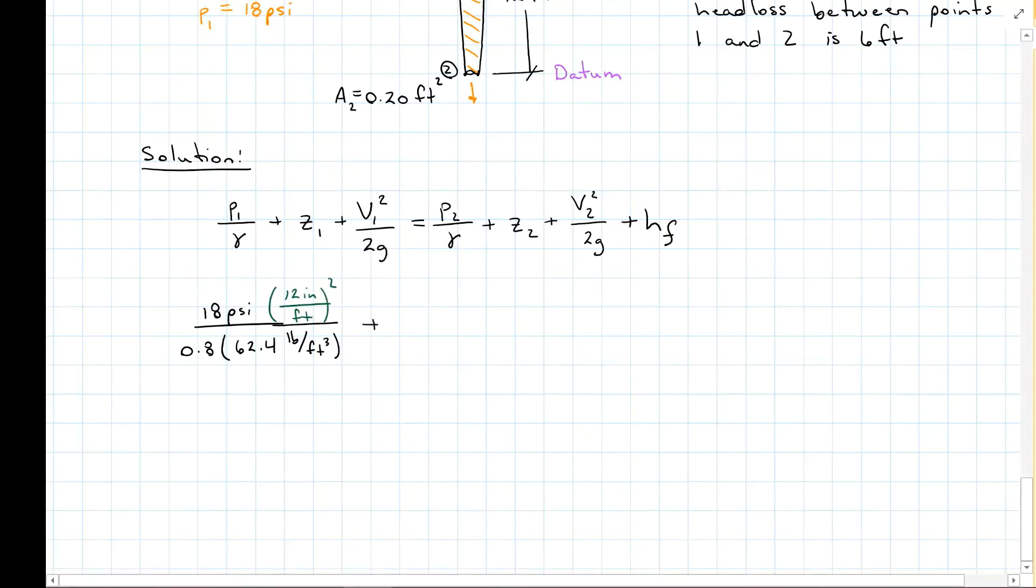Moving to my elevation, with my datum being at the bottom, that means that 1 is at 12 feet, plus velocity 1. I don't have a velocity, but I do have a flow rate. So let's do a little side trip over here. Flow rate is equal to velocity times area.